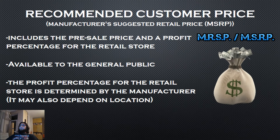The third type is the recommended customer price. This price is available to buyers, determined by the manufacturer, and includes the pre-sale price plus a profit percentage for the retail store. Big PC hardware stores retail components at this price and sometimes even offer lower prices because they receive components at the manufacturer pre-sale price.